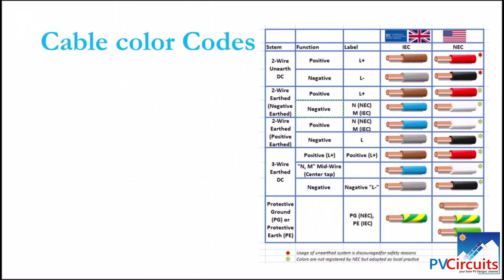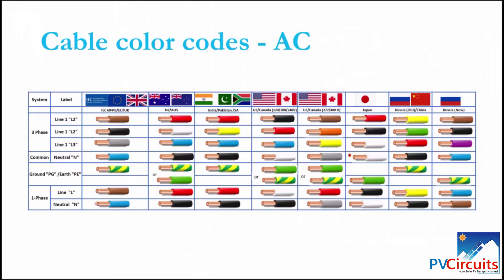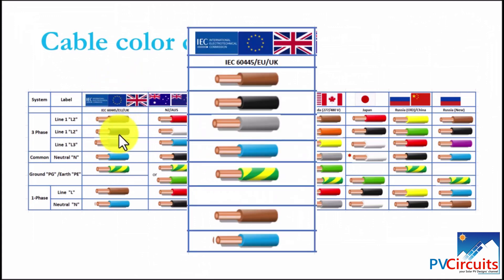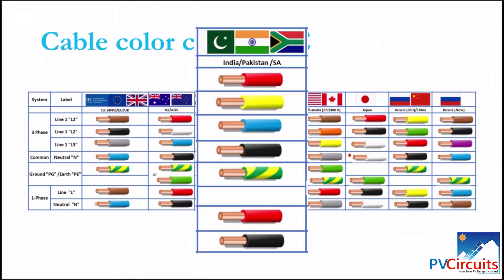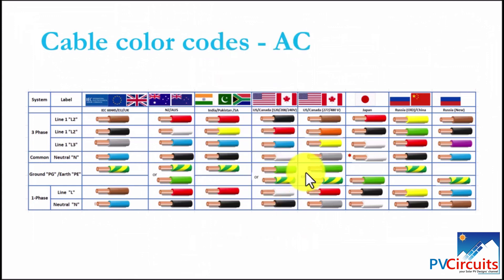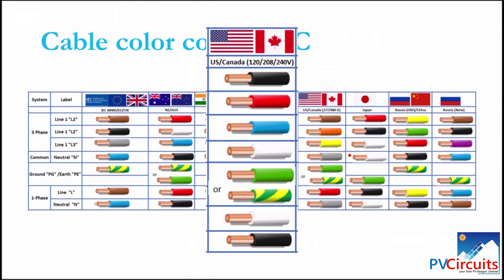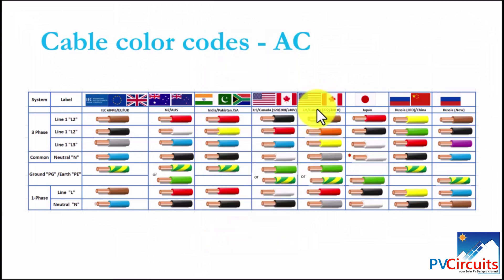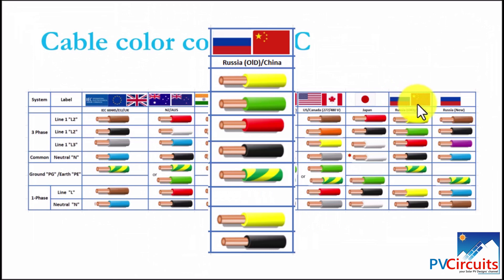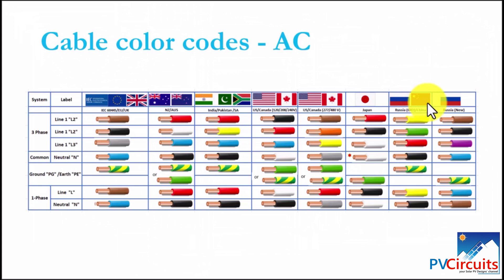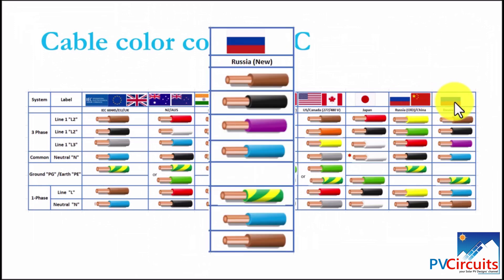We look at the AC cable standards and as I said before, this particular color code for the AC is defined in several regions. We see the IEC, EU and the UK. They have this system here. New Zealand and Australia have this system. India, Pakistan, South Africa have this system here. Then for the US and Canada, there are two color code systems. One for the voltage between 120, 208 and 240 volts. The other for 277 and 480 volts. Then Japan, Russia, China share this one but the Russians have moved on to develop a new color code system which is this one here.